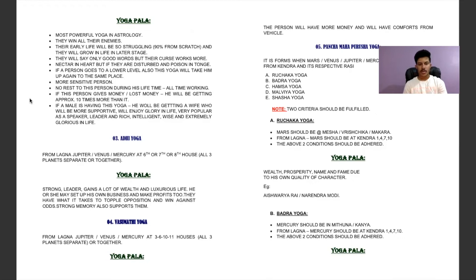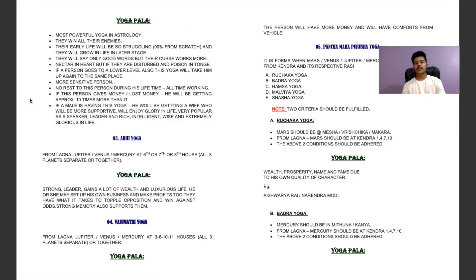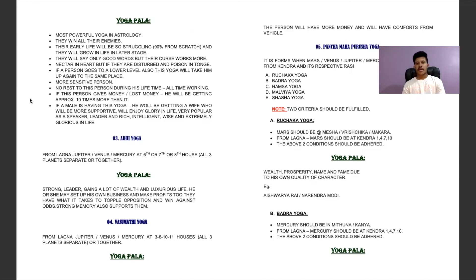They have what it takes to topple opposition and win against odds. Strong memory also supports them. Vasumati Yoga: from the Lagna, Jupiter, Venus, and Mercury should be in the 3rd, 6th, 10th, or 11th houses — all three planets separately together. Yoga phala: the person will have more money and comforts including vehicles.